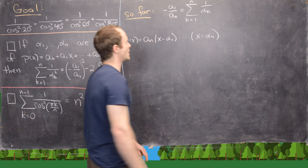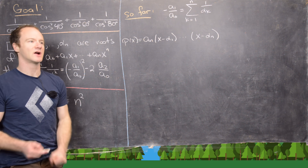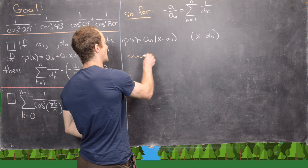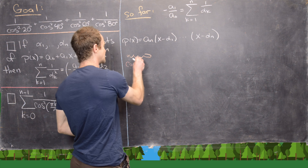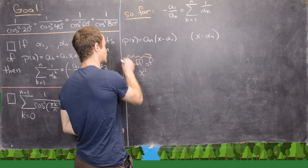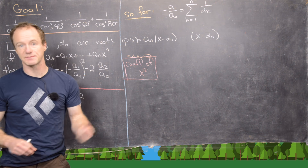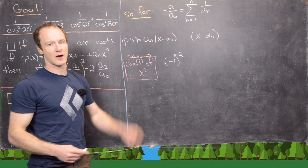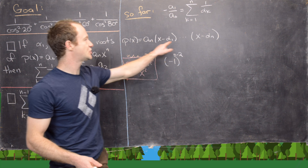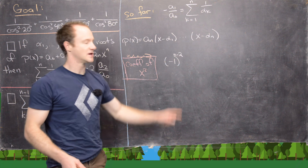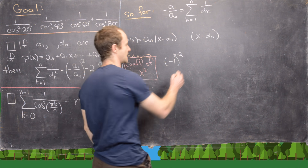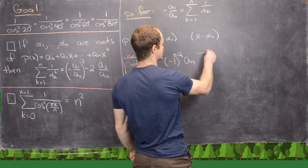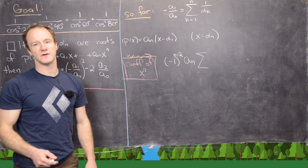Now we want to do something similar but look at the coefficient of x squared. Extracting that coefficient, we get minus 1 to the (n minus 2) times a_n, because we're choosing two x's and n minus 2 alphas, each attached to a minus sign. Then we have a double sum because there are two ways to remove alphas.